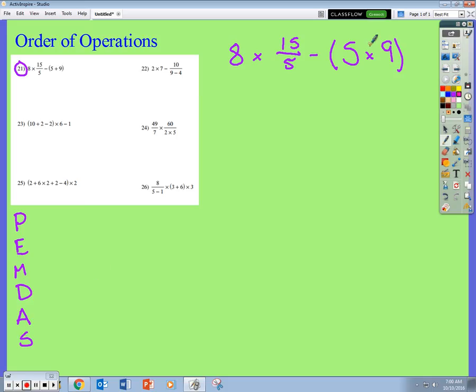So first thing I look at this problem, I see parentheses right here. So I'm going to simplify what's inside the parentheses and evaluate that. So 5 times 9 is 45. Everything else stays the same. 8 times 15 over 5 minus 45.